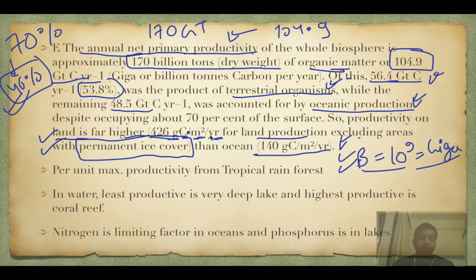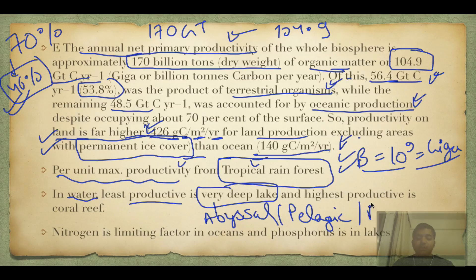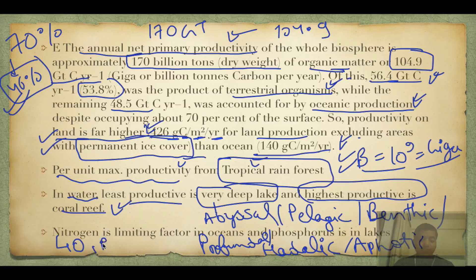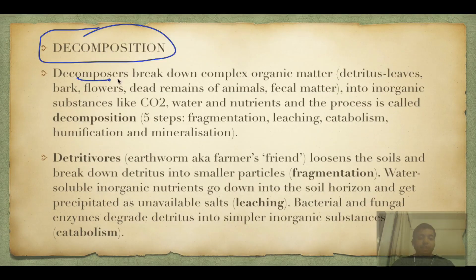In one meter square area, land productivity is approximately three times that of ocean. Maximum productivity is seen in tropical rainforests; in water, the least productive zones are very deep lakes, especially the abyssal zones — also called pelagic, benthic, profundal, hedalic, or aphotic zones. Remember these six names. Highest productivity in aquatic systems is seen in coral reefs. An important point: nitrogen is the limiting factor in oceans and phosphorus is the limiting factor in lakes — remember it as 'No IPL': Nitrogen in Ocean, Phosphorus in Lakes.